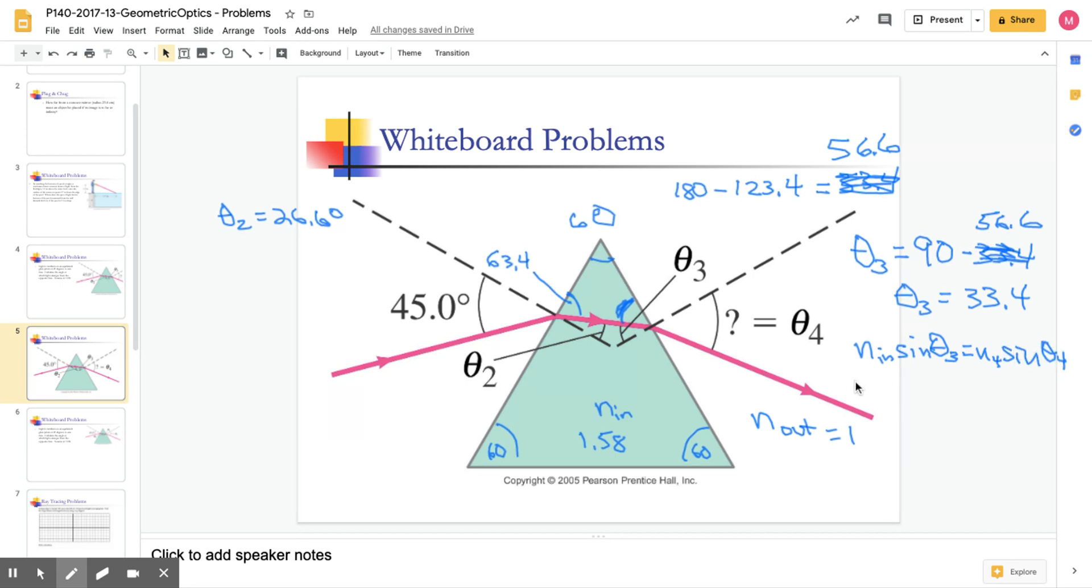And so, so that means that sine theta 4 is equal to, oh, this should be out, out. So sine theta 4 is going to be n in over n out times sine theta 3. So I'm going to get n in is 1.58 over n out is 1. And then sine of 33.4 is equal to sine of theta 4. Theta 4, so theta 4, when you plug that in, you end up with an angle of 60.4 degrees.